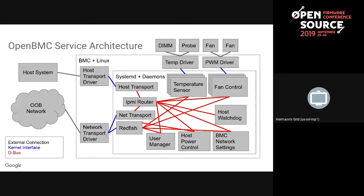Network settings and user manager also live on the BMC and have mutable state. When the host system changes the BMC's network configuration, it gets written through the IPMI router into the network settings daemon and persisted to disk. The core theme is that if you ignore network components, you have single points of transit to the outside world—communicating only through the transport driver (KCS bridge or block transport), through the transport-handling daemon, through the IPMI router (IPMID), which proxies into all services. But if any one of those things fails, you have no way of talking to the outside world. The BMC is completely isolated—as far as you're concerned, it's bricked.